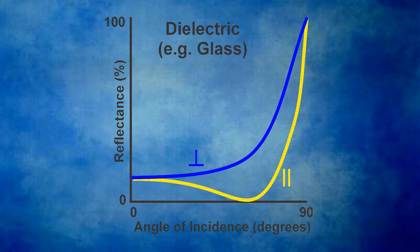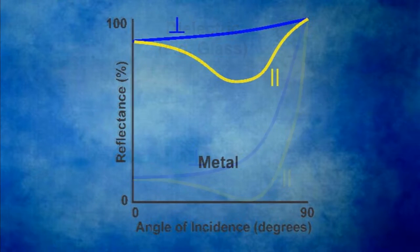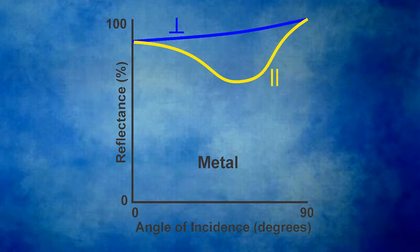This graph is true for a dielectric such as glass — a dielectric is a material that doesn't conduct electricity. Here's a similar graph for polished metal. You'll notice that the reflectivity is much higher than glass, but you'll also notice that the light polarized parallel to the plane of reflection is somewhat attenuated. This means that the reflected light off of metal can be partially polarized.